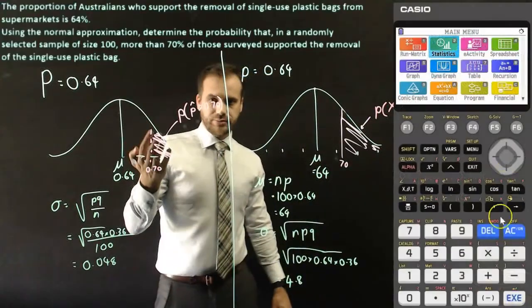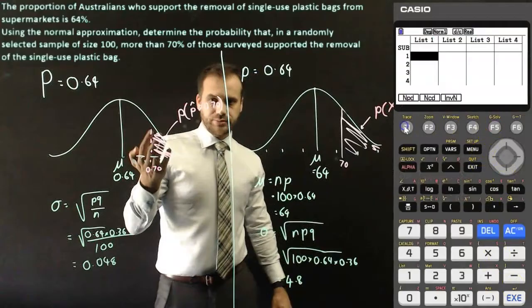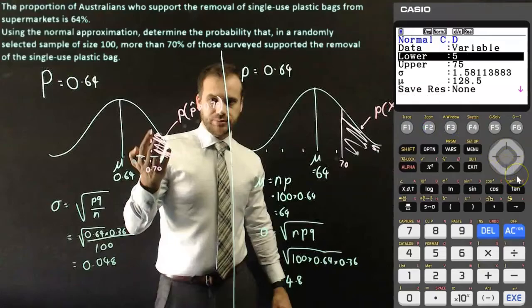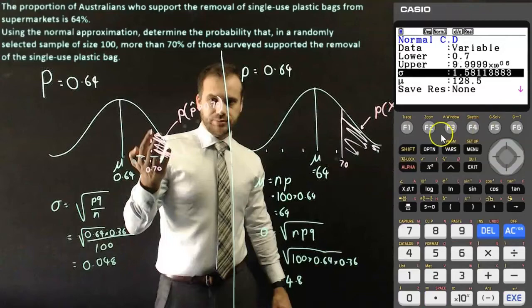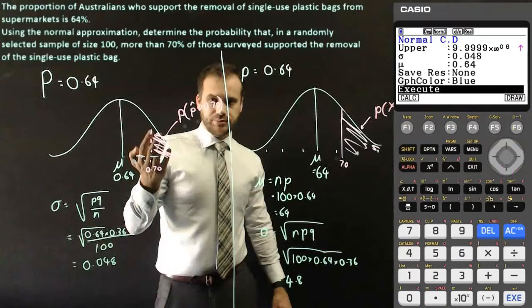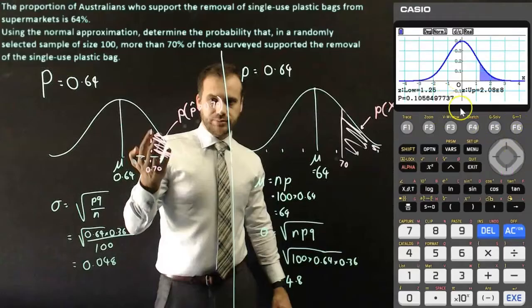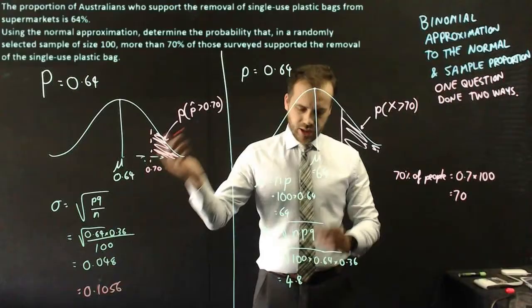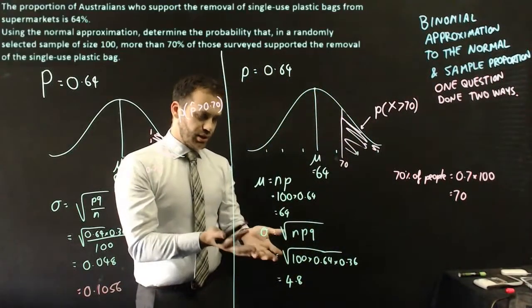If I type this into my calculator, go to stats mode, go to distributions, normal distributions, ncd. Our lower is 0.7. Our upper is an incredibly large number. Our standard deviation here is going to be 0.048. And our mean is going to be 0.64. And we can draw it. We can see that our probability is 0.1056.